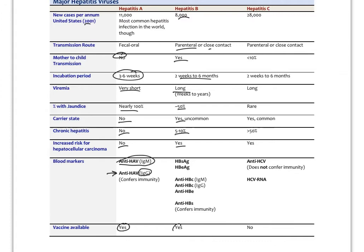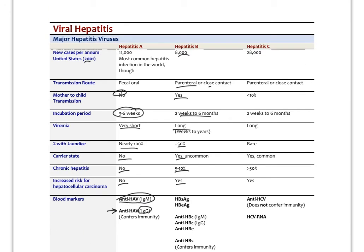For hep C, this again is outdated, but in 2001 there were 28,000 cases a year in U.S. Not fecal oral but blood contact, parenteral. Less than 10% mother to child transmission. Two weeks to six months incubation, long viremia, rare jaundice. Yes, common carrier state. Yes with chronic hepatitis. Yes with liver cancer. Anti-HCV is our antibody. Just having that doesn't mean you have immunity like the other antibodies. We always check the viral load. As of early 2020, we do not have an immunization available.